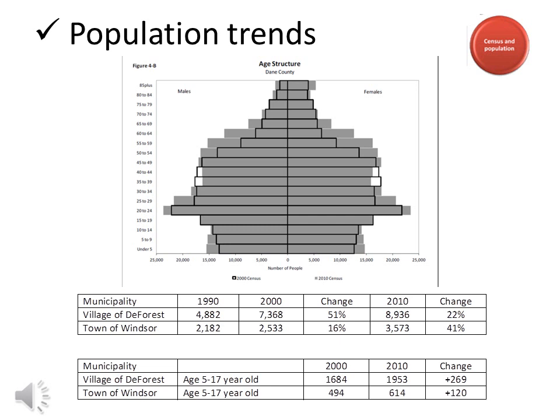We found that the Dane County information does present a mirror image of what is happening in the DeForest-Windsor area. The chart shows that the village of DeForest experienced growth between 1990 and 2000, increasing by 51%, and the town of Windsor in the same period increased by 16%. Comparing 2000 to 2010, the village of DeForest had smaller growth at 22%, while the town of Windsor's population increased by 41%. Overall, in that 10-year period, the school-age population of 5 to 17 grew by almost 270 students in DeForest and 120 in Windsor — an increase of almost 400 students in 10 years. This explains why it is becoming increasingly more difficult to serve our students without increasing classroom and educational space.